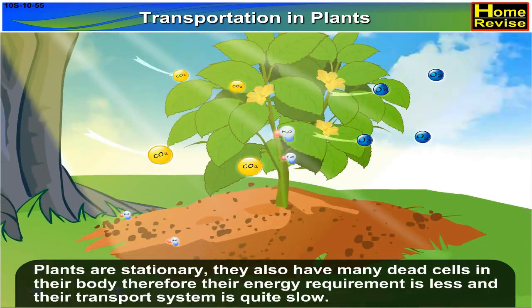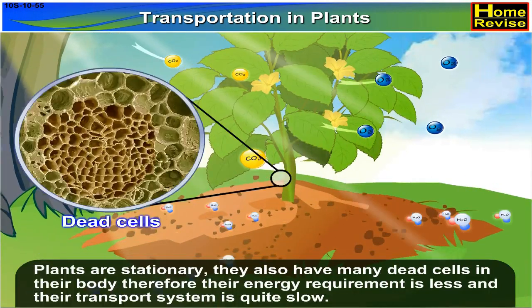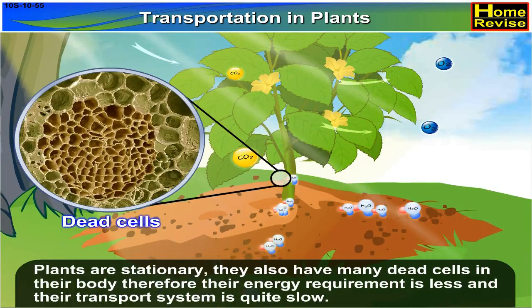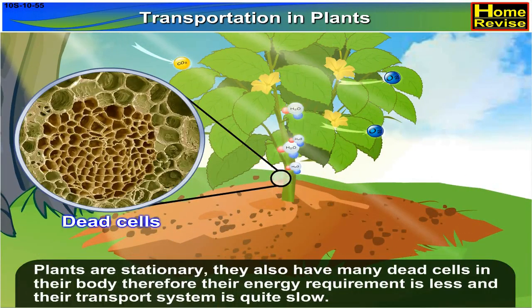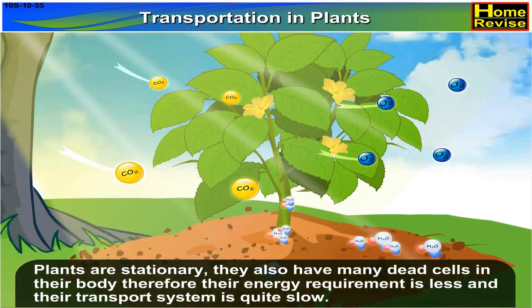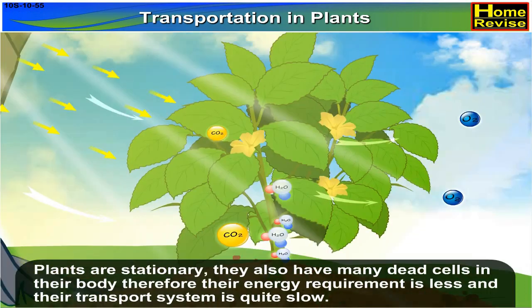Plants are stationary. They also have many dead cells in their body. Therefore, their energy requirement is less and their transport system is quite slow.